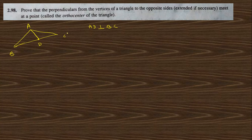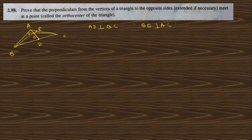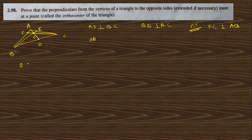We draw AD perpendicular to BC, and BE perpendicular to AC. If we draw a line from the intersection point O, and CF is that line, we need to prove that CF is perpendicular to AB, meaning the three perpendiculars are concurrent. Take O as the origin.